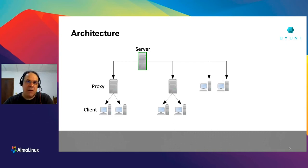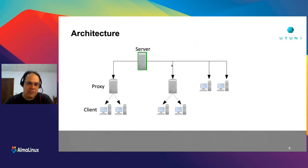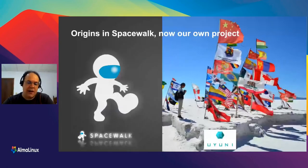If you have beyond 25,000 to 30,000 systems, you can also use a multi-server architecture — what we call the hub — where you have another server acting as an orchestrator between several Uyuni servers. The origins of Uyuni are in a project founded by Red Hat called Spacewalk. SUSE forked that project in 2018 and created Uyuni.